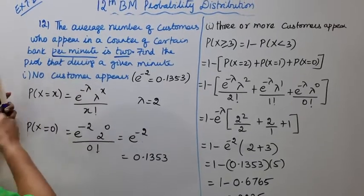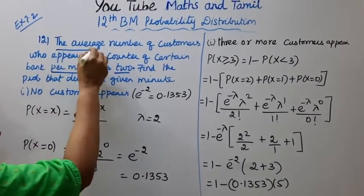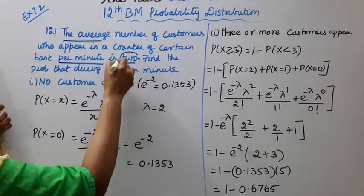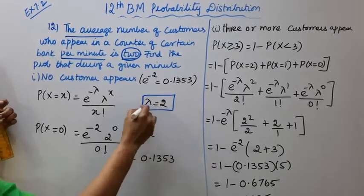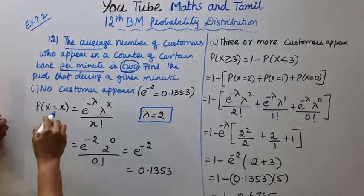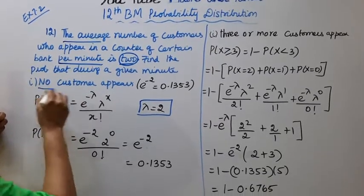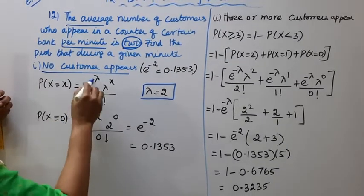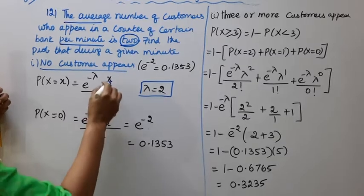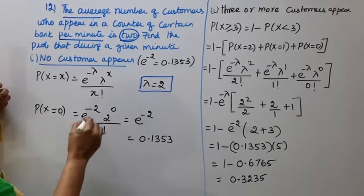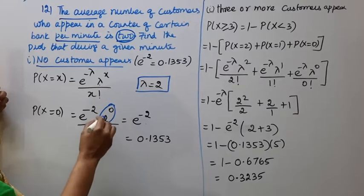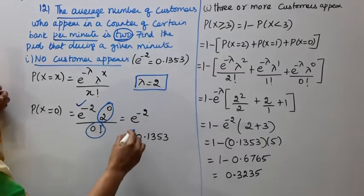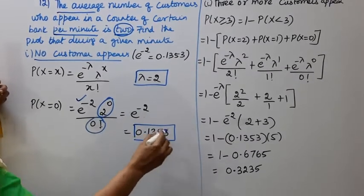Lambda is equal to the average number of customers per minute, which is 2. For no customer appearing, P(X = 0) = e^(−2) × 2^0 / 0! = e^(−2) × 1 / 1 = e^(−2) = 0.1353.